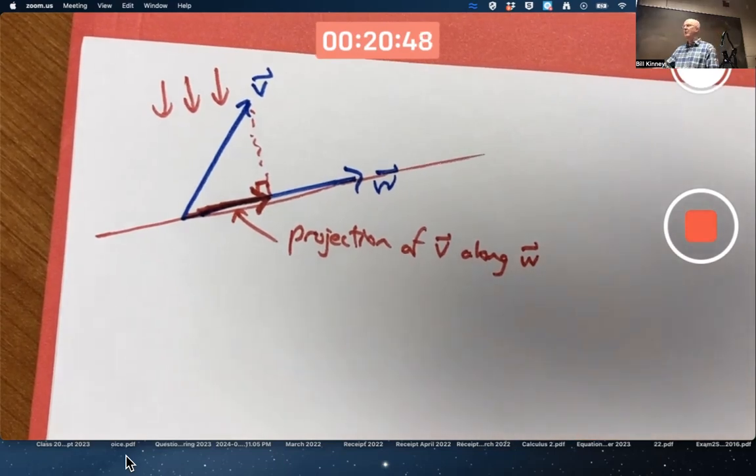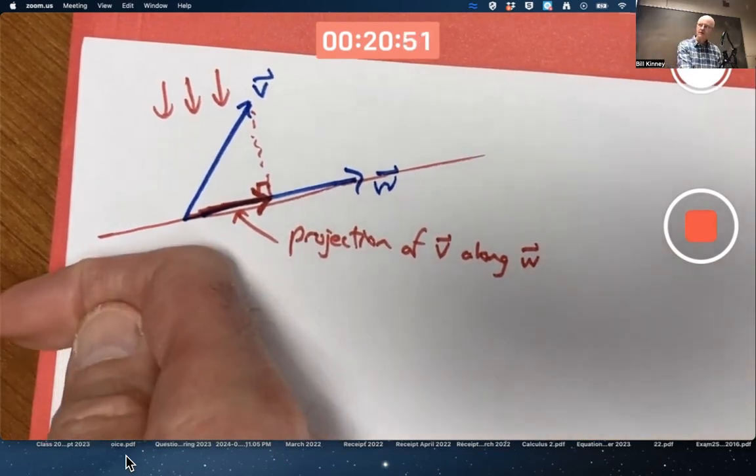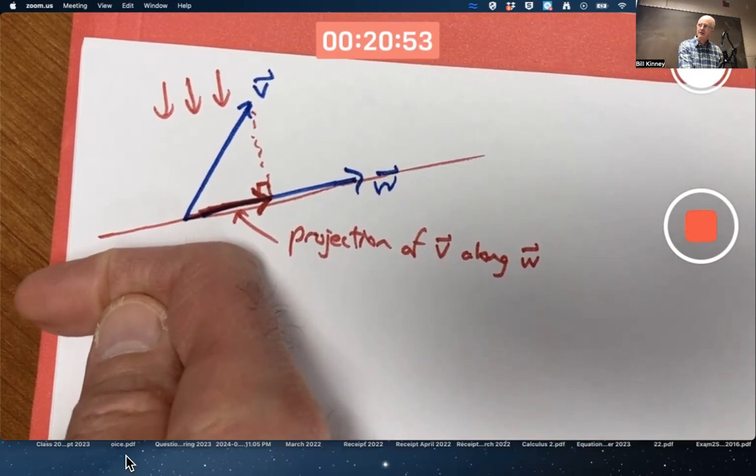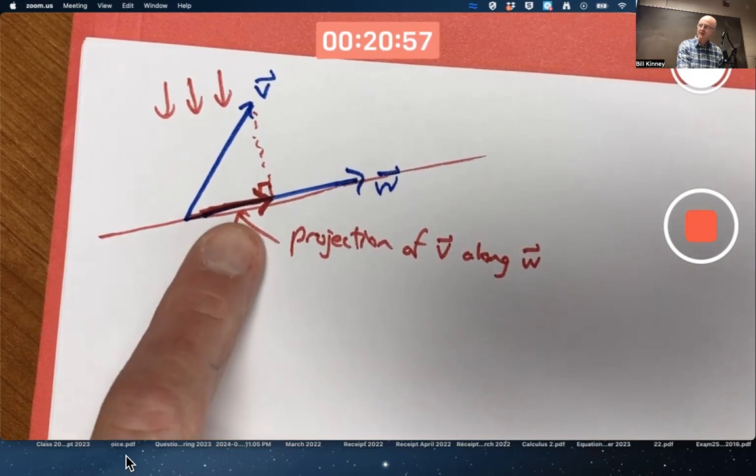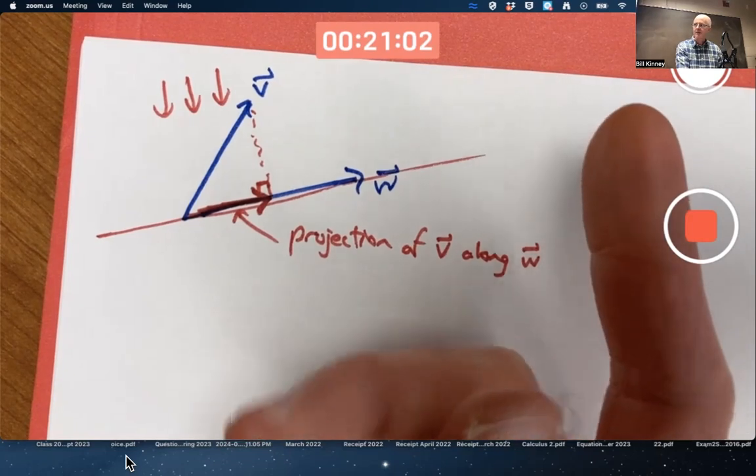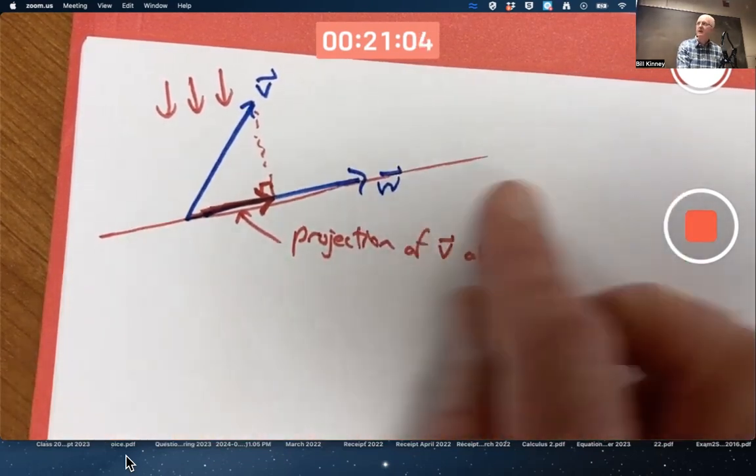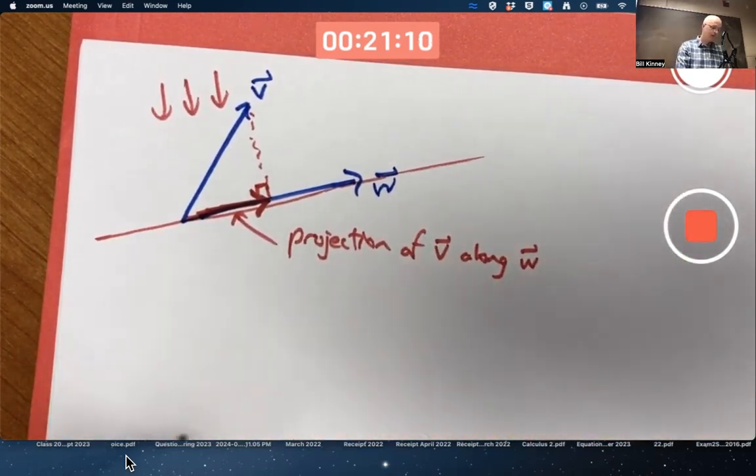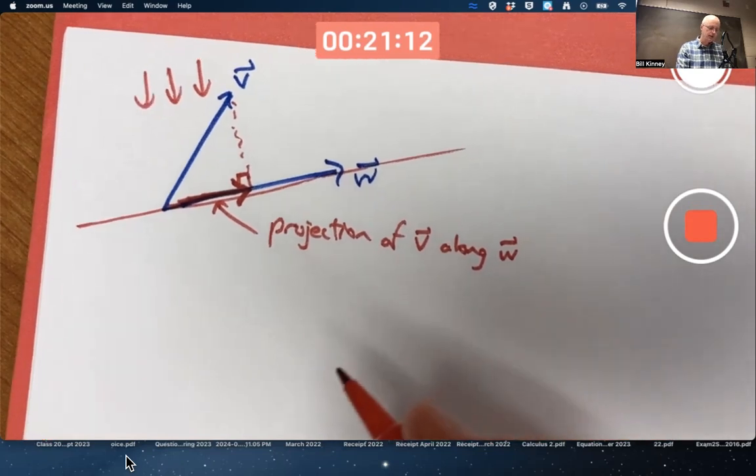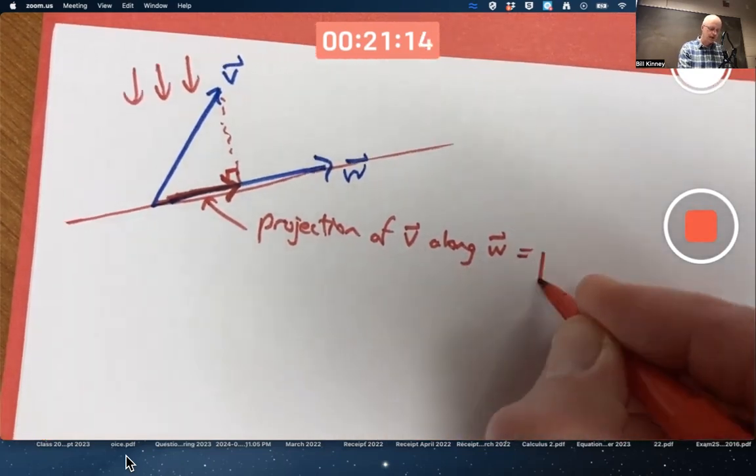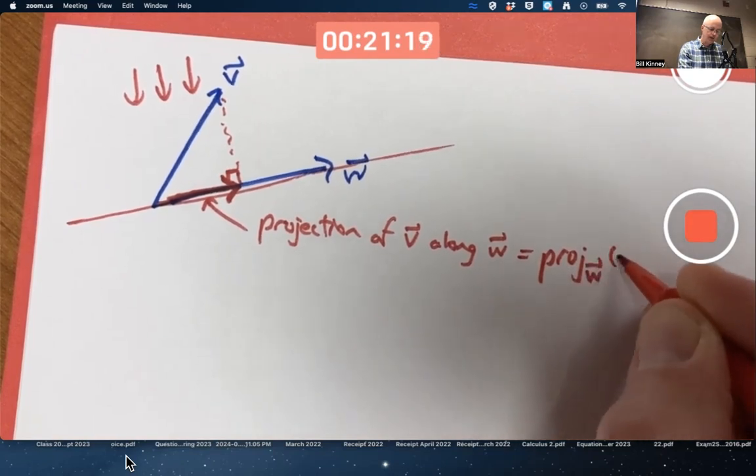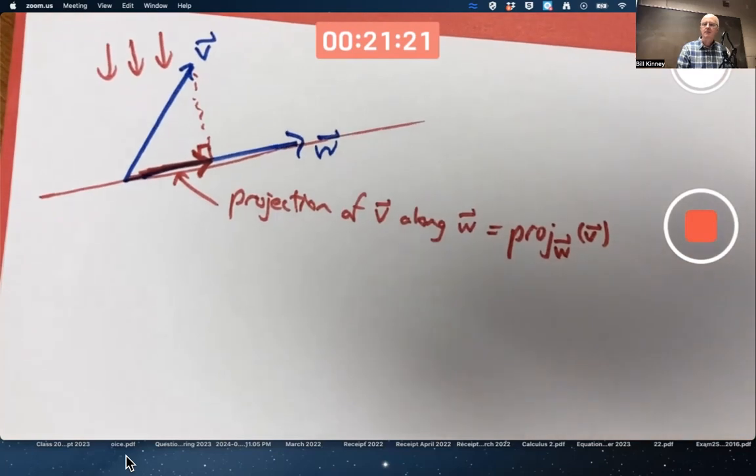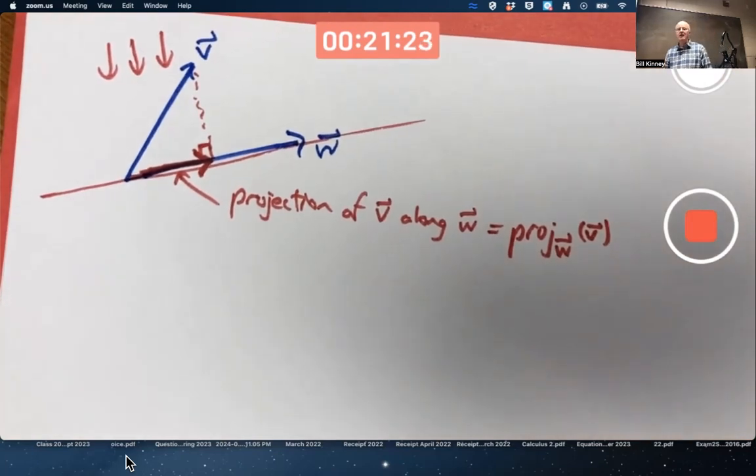By the way, if W were pointing in the opposite direction, still parallel but in the opposite direction, the projection of V along W would still be the same vector. It's not the direction left or right of W that matters, it's the line through W that matters. Notationally, it's written proj sub W of V, projection of V along W.